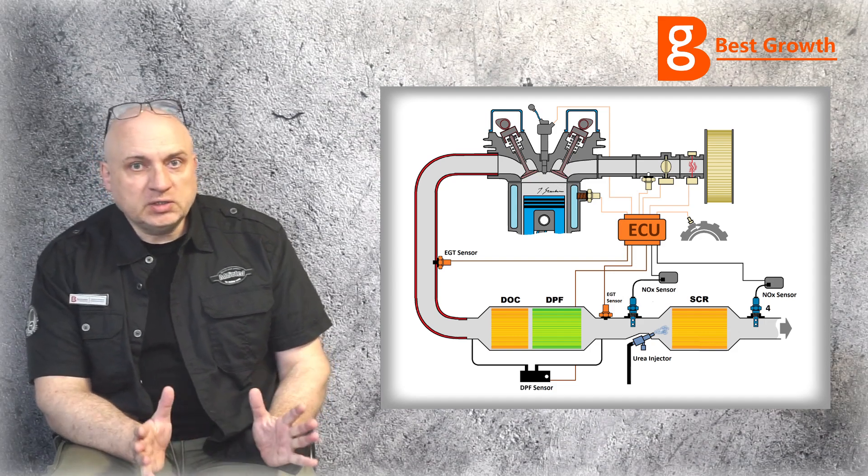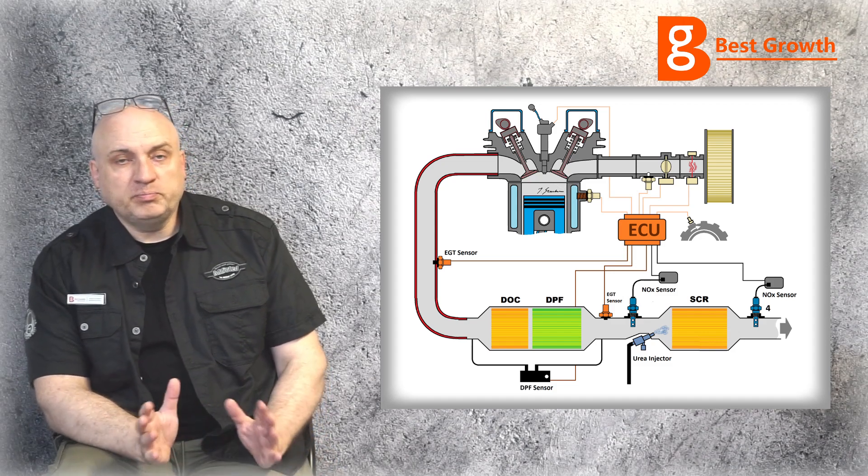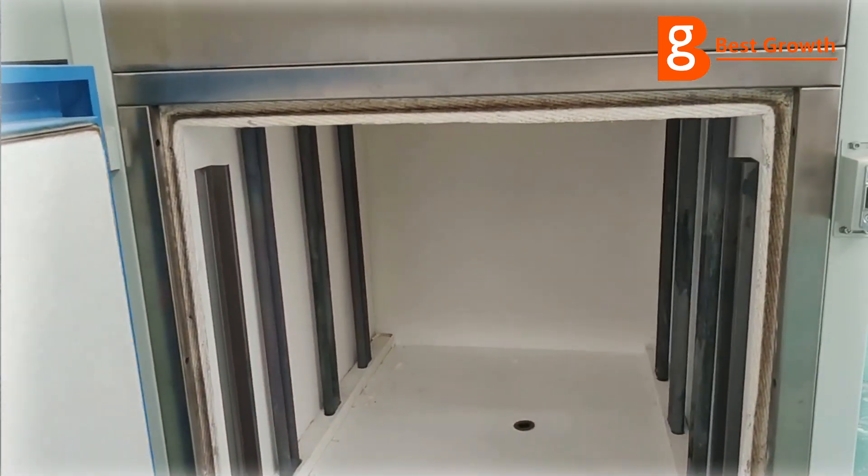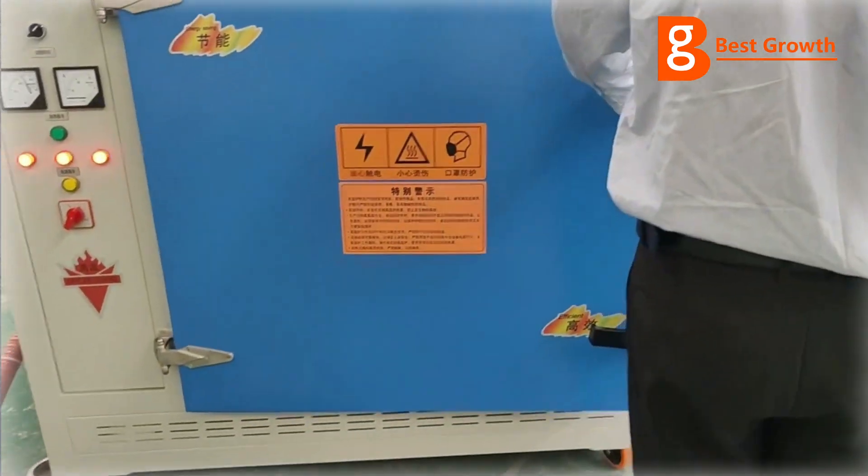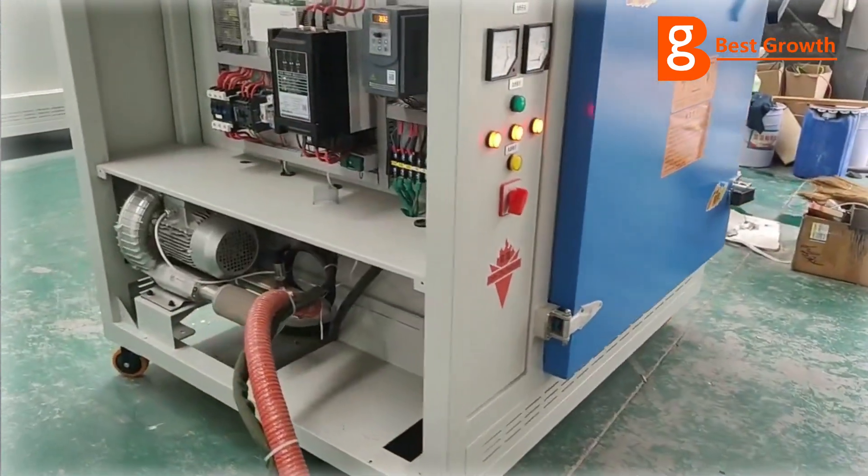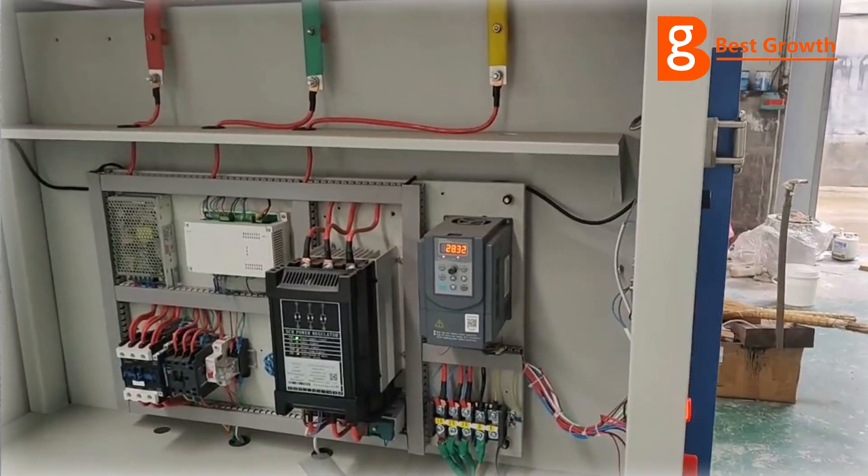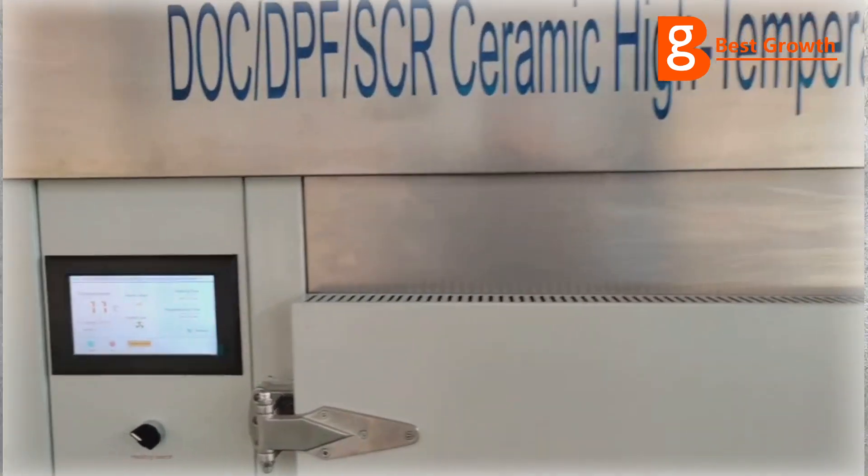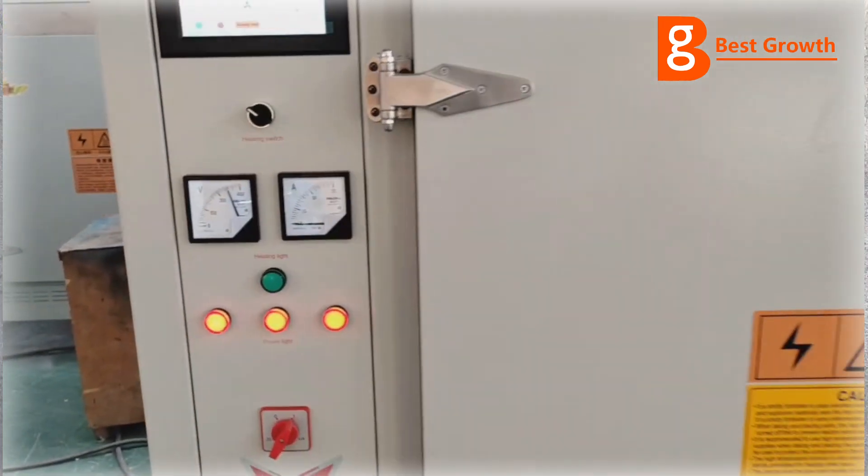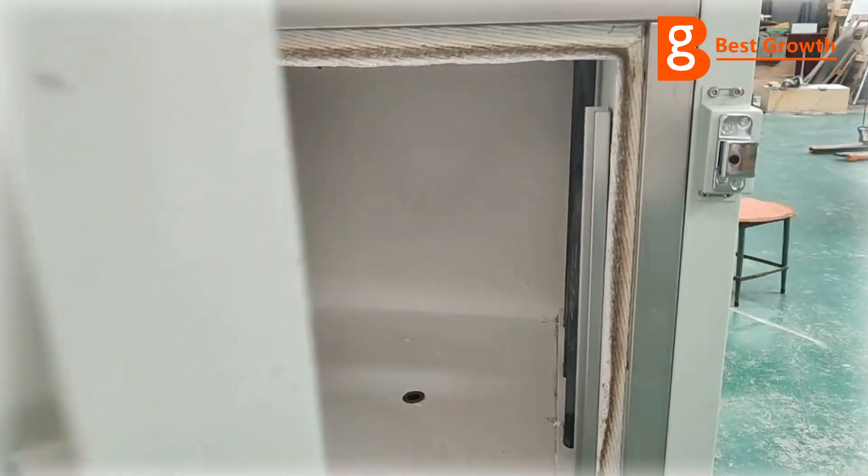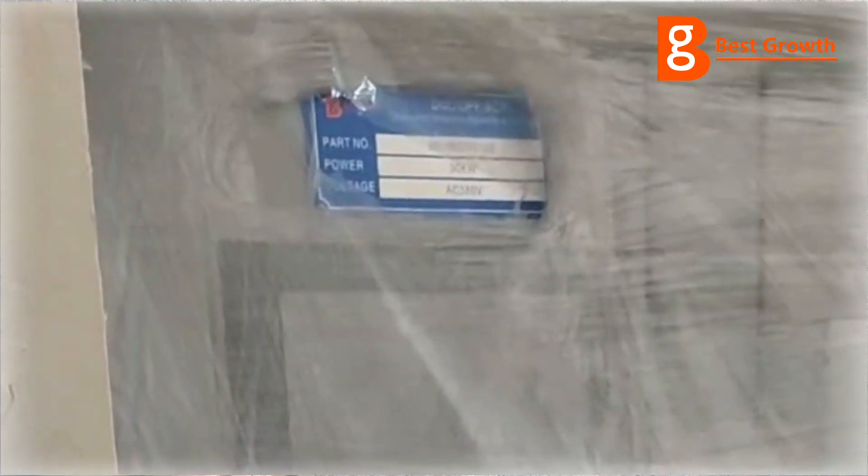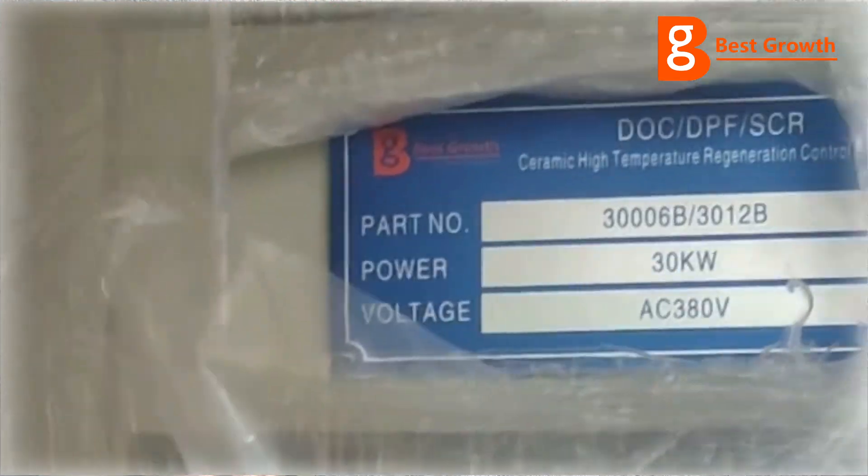So the other solution is to take the DOC DPF filter out of the vehicle and place it into the machine like this one. And this machine allows us to fully control the temperature inside. So we can conduct the burning out process inside the DOC DPF catalyst. We can preset the demanded temperature to fully burn out all accumulated soot and particles inside the DPF filter. This is, of course, much cheaper and faster solution than buying a new one. This is why many workshops buy these machines these days from us, from Best Group. Our clients choose us because of the well-known high quality of our products and also because of the service we provide here in Europe.